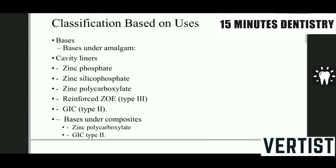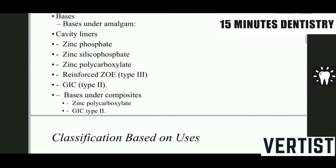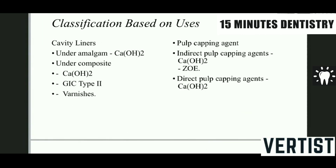As cavity liners under composite restorations, calcium hydroxide, Type 2 glass ionomer, and different varnishes are used. For indirect pulp capping, calcium hydroxide and zinc oxide are used. For direct pulp capping, calcium hydroxide is the agent of choice.